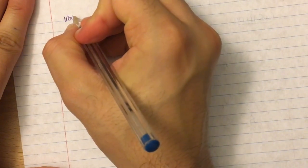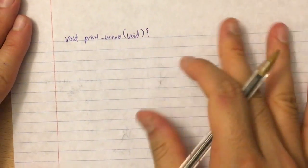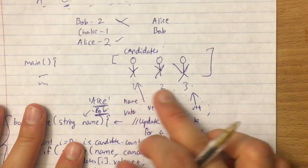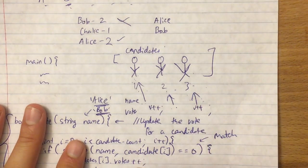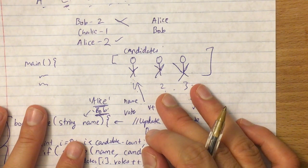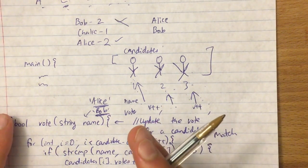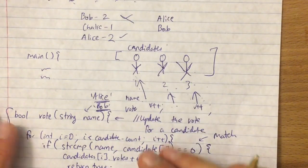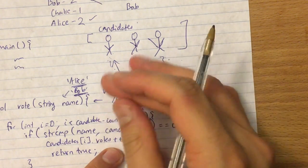For void print_winner, we want to find the person with the max votes. We go through the updated candidates array and find the candidate with the maximum amount of votes. There are two ways — you could sort it, but since it's an array of structs, that's a bit more complex. I would do it by just finding the max.